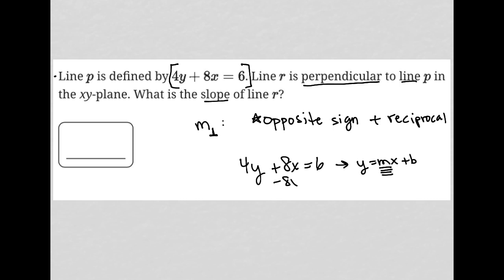So I subtract 8x from both sides. I'm left with 4y equals negative 8x plus 6. I then divide everything by 4, and I'm left with y equals negative 2x plus 3 halves.